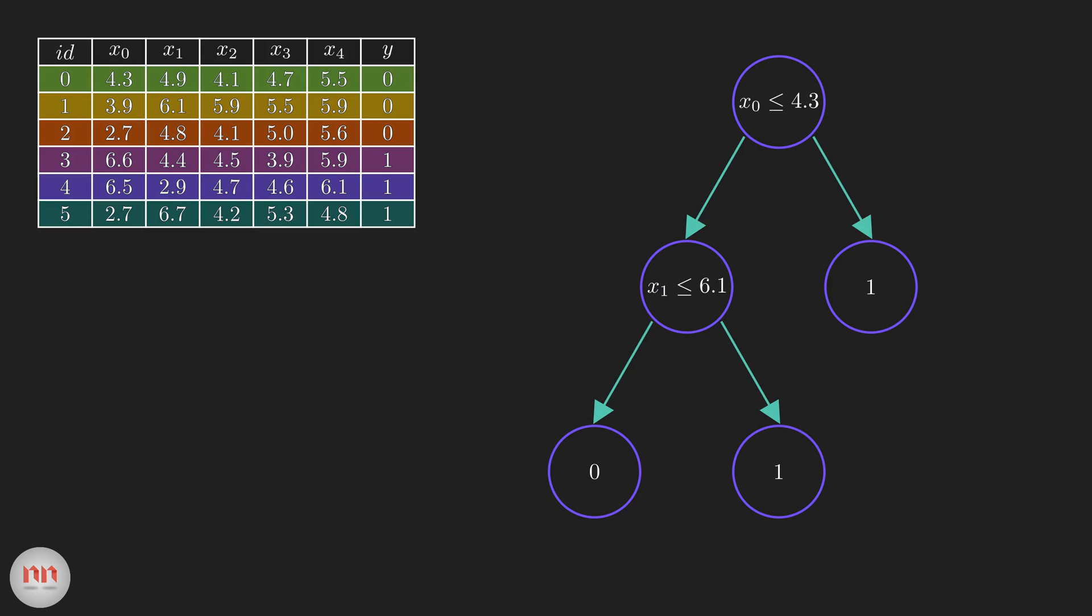So, what's the problem with decision trees? Let's change our training data slightly. Focus on the row with ID 1. We are changing the X0 and X1 features.